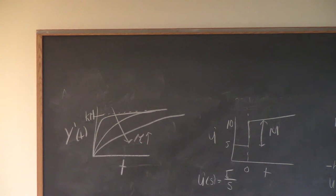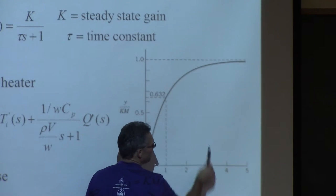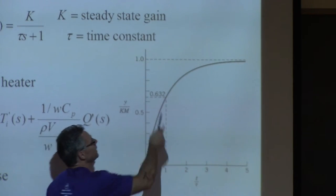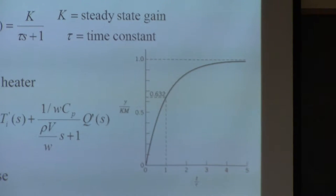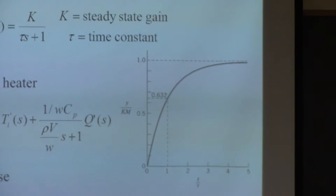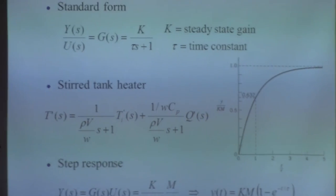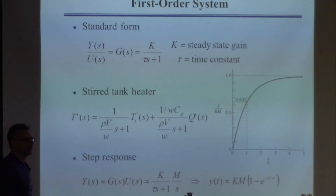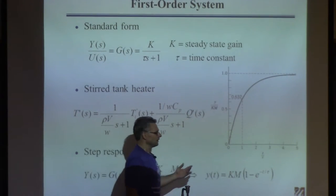If your system has a time constant of an hour, you'll have to wait about four hours to reach steady state. For example, a distillation column problem with a time constant of 15-20 minutes takes about an hour to an hour and a half to reach steady state. This is a real consideration when operating a system.